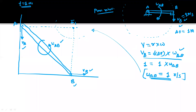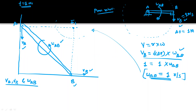Here we will apply the formula between linear velocity and angular velocity for general plane motion. We want to find out the relation between VA, VB, and Omega_AB, which is the angular velocity of rod AB performing general plane motion. Observing the velocity of A, VA is perpendicular to distance AI1, so AI1 becomes the radius. The complete rod AB is rotating about point I1, so we use the formula V = R × Omega.